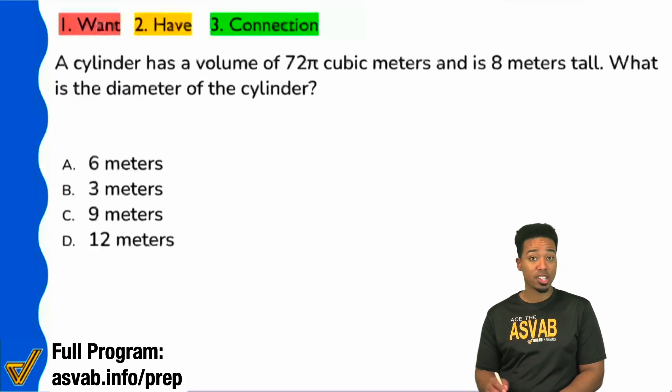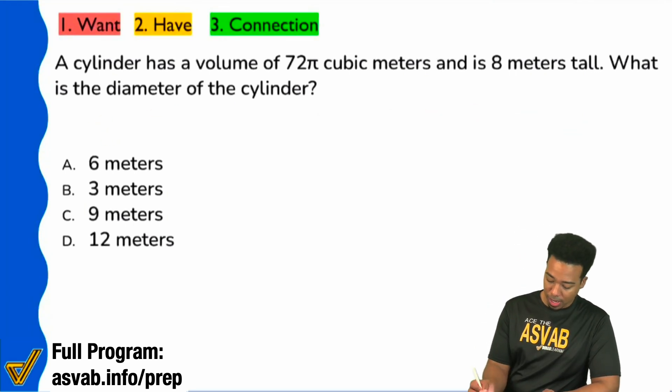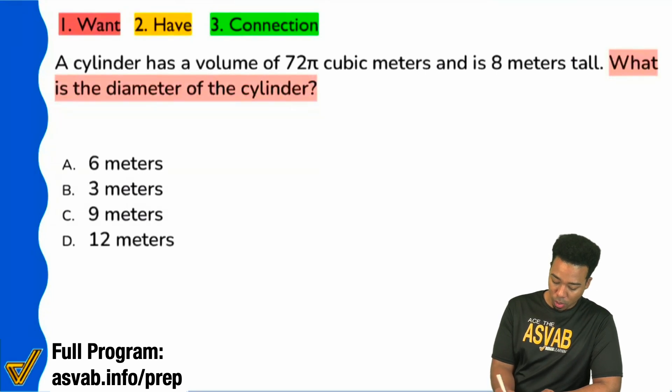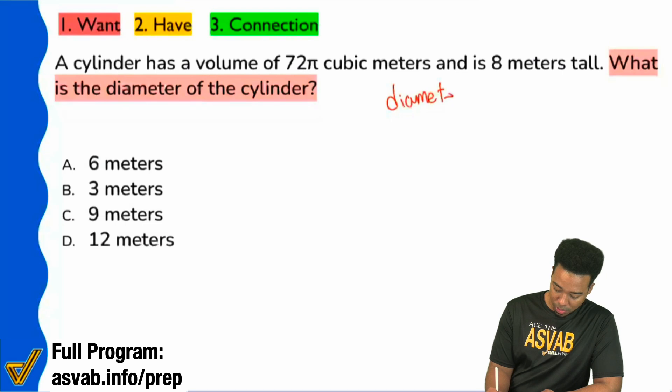Let's go ahead and understand first what the question is asking us to find. It's asking what is the diameter of the cylinder? I'm going to write that out and highlight it. We just want to know what the diameter of the cylinder is.